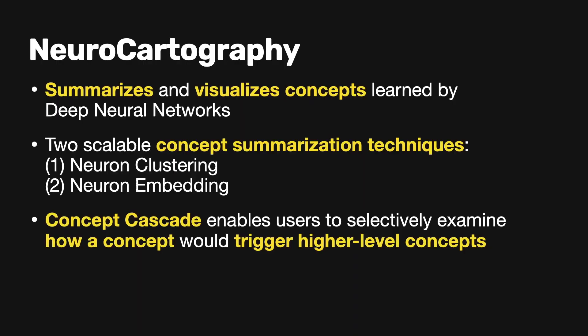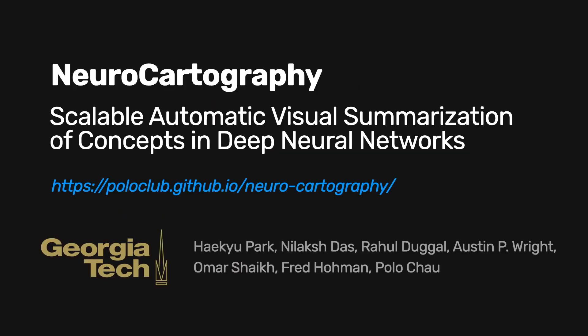To wrap up, NeuroCartography is an interactive system that scalably summarizes and visualizes fundamental concepts that contribute to the behaviors of large-scale image classifier models. We presented two scalable concept summarization techniques: neuron clustering, which groups neurons based on the semantic similarity of the concepts neurons detect, and neuron embedding, which encodes the associations between related concepts based on how often they co-occur. Interactive exploration of concept cascade enables users to selectively initialize and examine how a concept detected by a neuron group would trigger higher-level concepts across subsequent layers in a neural network. NeuroCartography is open-sourced and available at the provided link.